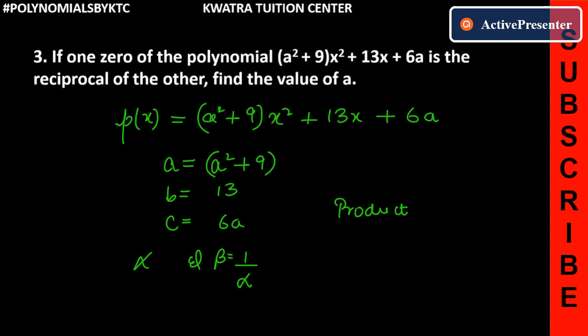So we can use product of zeros better than sum of zeros. Product of zeros means the two zeros multiplied. Product of zeros is equal to c/a.